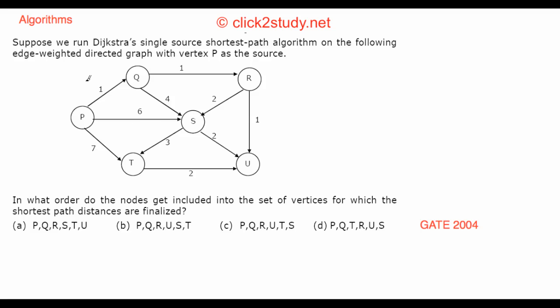So we come to the next problem. Suppose we run Dijkstra's single source shortest path algorithm on the following edge weighted directed graph with vertex P as the source. This is a directed graph and we have to run Dijkstra's algorithm on this and our source is P.